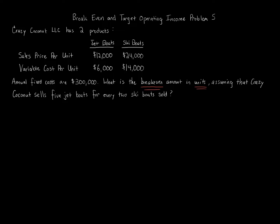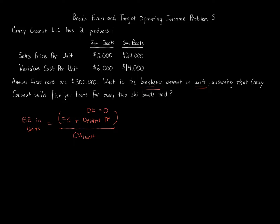Let's start with our formula for break-even amount in units. Break-even amount in units equals fixed costs plus desired profit — which for a break-even question is zero — divided by the contribution margin per unit.